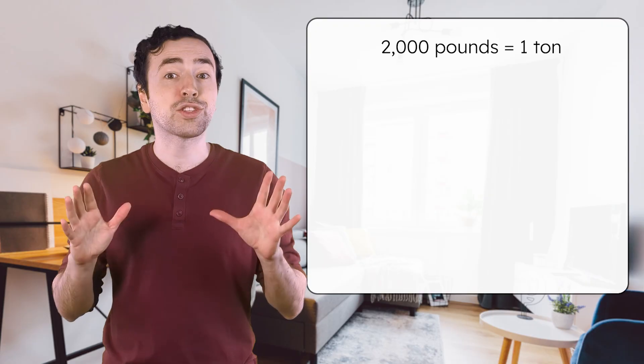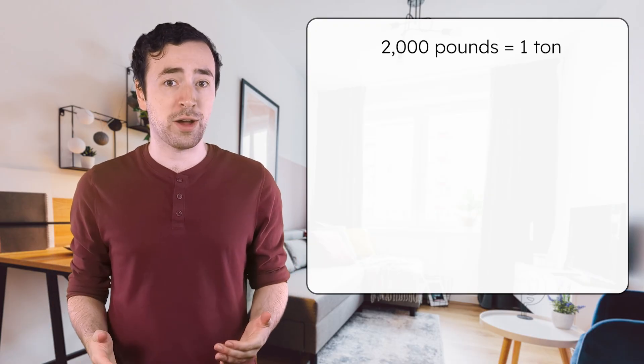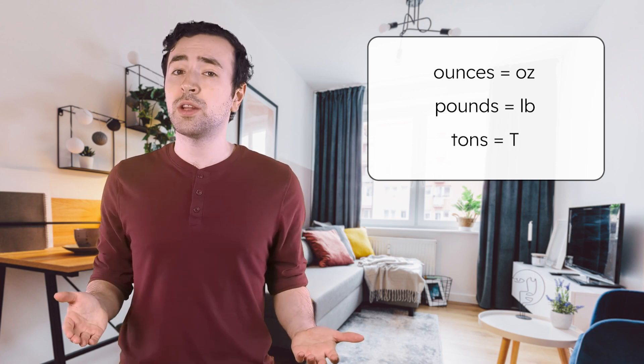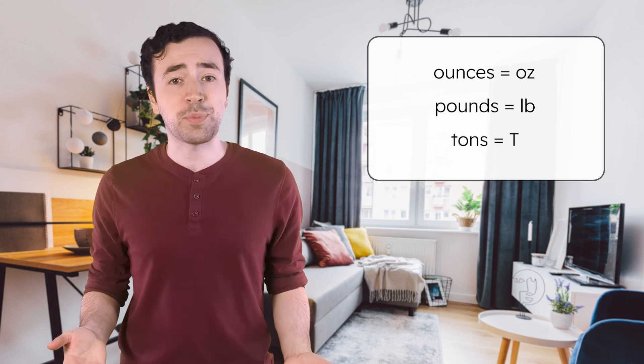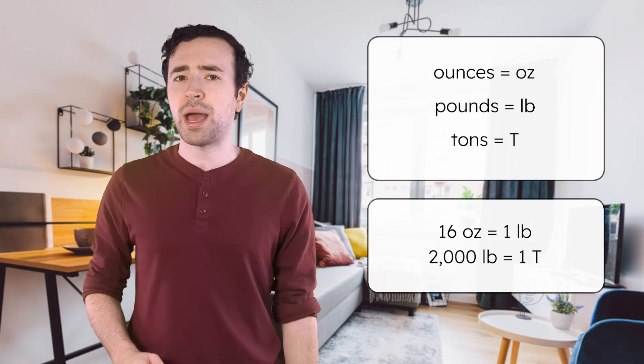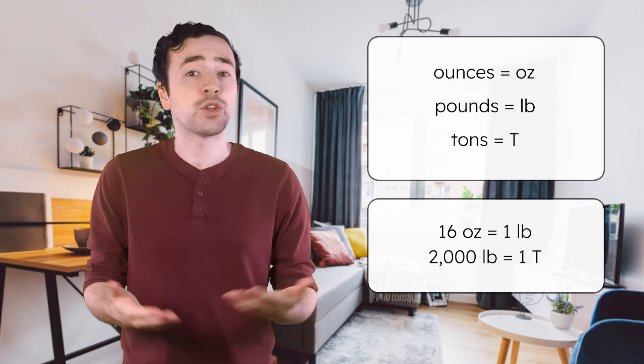And a ton? That's huge — 2,000 pounds. Think about a car or an elephant; that's what we measure in tons. So when I said my gifts weighed a ton, I was just exaggerating. They don't actually weigh 2,000 pounds. A ton is way more than anyone could carry in their suitcase. People usually use abbreviations for these units of measurement instead of writing out the whole name. Ounces are abbreviated as OZ, pounds are abbreviated as LB, and tons are abbreviated with just a capital T. These abbreviations save space and make it quicker to write down weights. So now you know: 16 ounces equal 1 pound, 2,000 pounds equal 1 ton, and we use abbreviations to write all of these.